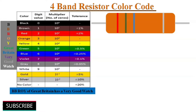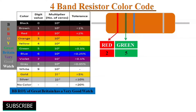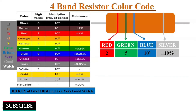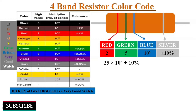Now let's calculate the resistance value of this four-band resistor. The first two color bands are red and green respectively. The first color band is red, so its value is 2; the second color band is green, so its value is 5, giving us the two-digit number 25. The third color band is blue, representing a multiplying factor of 10 to the power of 6. The fourth tolerance color band is silver, so its value is ±10%. Combining all these: 25 × 10⁶ ±10%, giving a resistance of 25 megaohms ±10%.